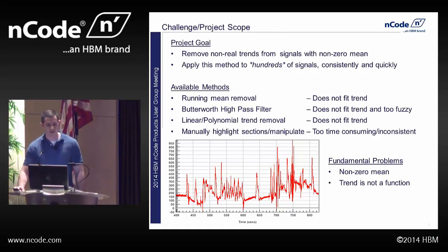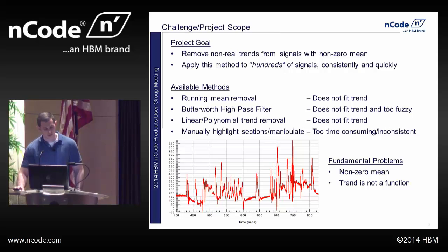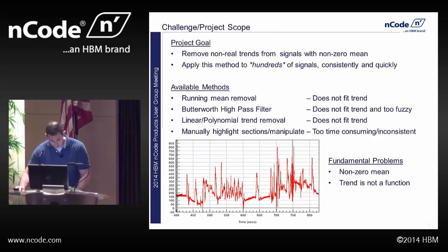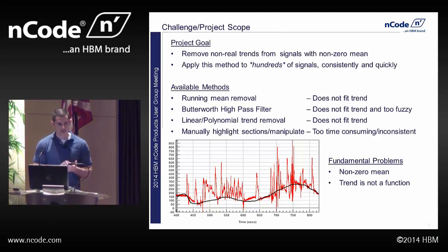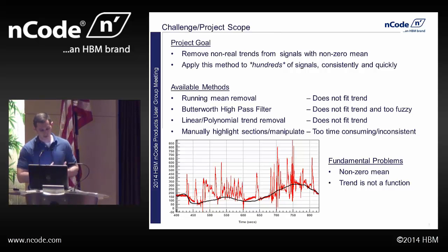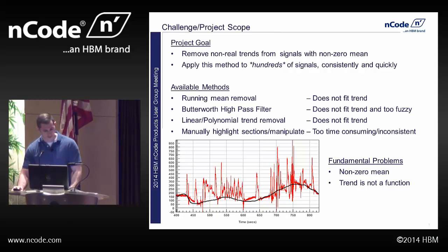You might think to draw a running mean and remove it, use a high-pass Butterworth filter, a polynomial or linear trend removal tool, or some manual interaction. A running mean can overshoot with a short window or approach a straight line with too long a window — neither is good. Even a well-tuned running mean may remove real data you want to keep, and the Butterworth filter is similarly blurry and removes even more real data.